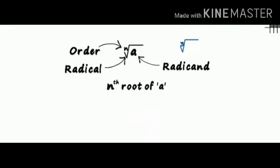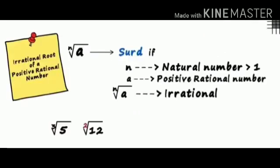In the surd, nth root of a means: a is the radicand, n is the order of the surd, and the square root symbol is known as the radical sign. Here are the rules to recognize a surd: n is a natural number greater than 1, meaning the order of the surd should always be greater than 1. a is a positive rational number, and the nth root of a must be an irrational number to be called a surd.